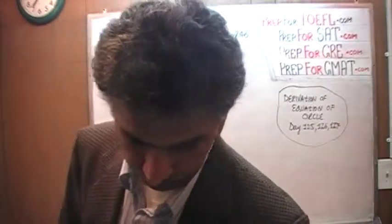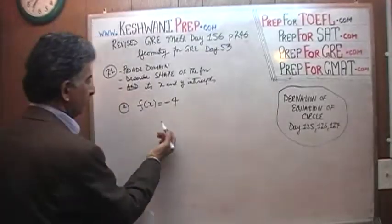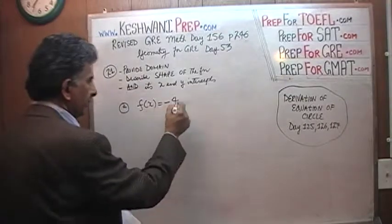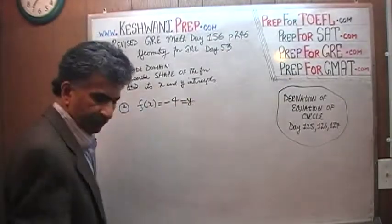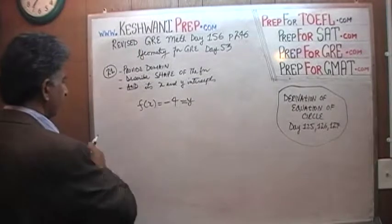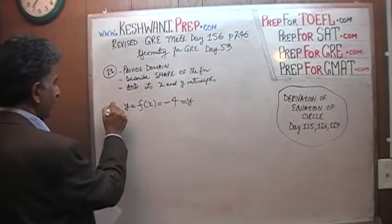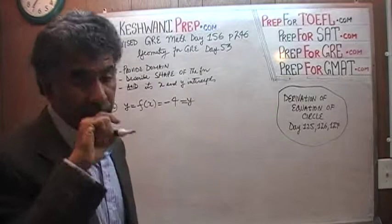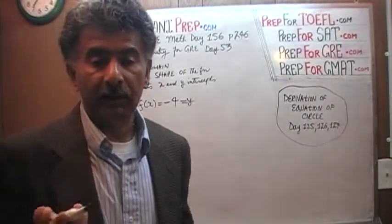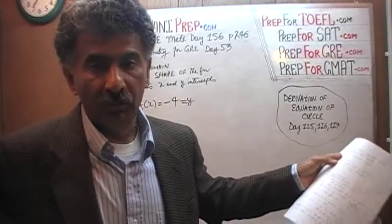The very first function they give us is this one here. F of X equals negative four. And of course, we know that F of X is the same as Y. Typically we write this as Y equals F of X. The value of the function is the Y coordinate of a given point — whatever the Y coordinate of a given point is, that is what is called the value of the function.